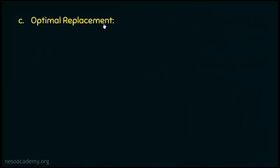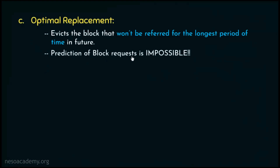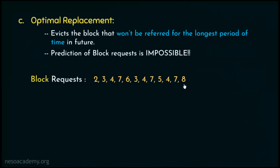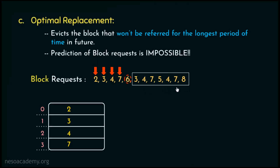Next up is the optimal replacement policy. This evicts the block that won't be referenced for the longest period of time in the future. Since prediction of block requests is impossible, it can't be practically implemented. However, its working principle can be illustrated on paper. Suppose we have a fully associative cache with 4 lines. For the first 4 block requests, the cache lines are filled. During block request 6, the cache is full; looking ahead at future requests, block number 2 is not going to be used for the longest time. Therefore, block 2 is evicted and makes space for block number 6.